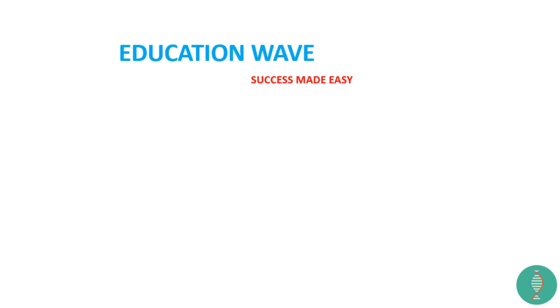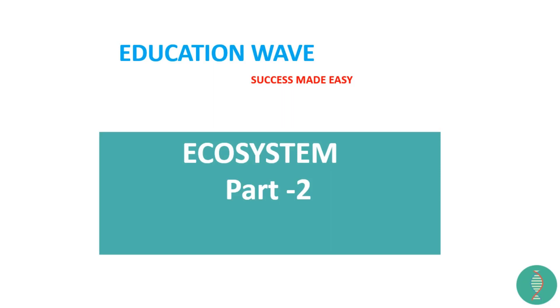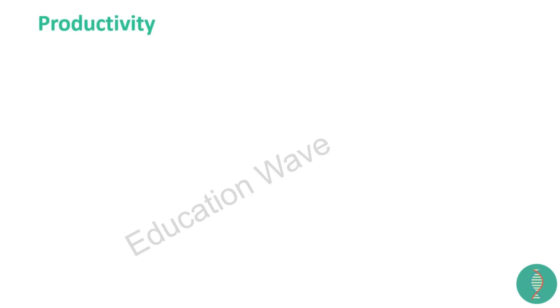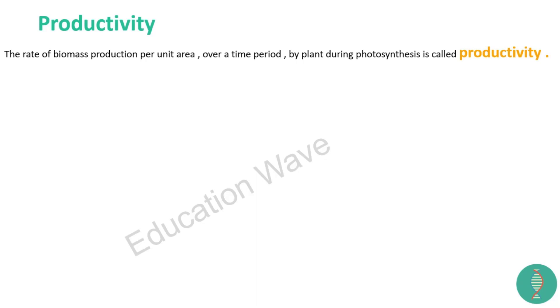Hello friends, welcome to Education Wave - Success Made Easy. This is ecosystem Part 2. Last video mein we had discussed ecosystem kya hota hai - the introduction part was covered. Now in this video we are going to learn about productivity. So what is productivity? Iske do types hain - primary productivity and secondary productivity. The rate of biomass production per unit area over a time period by plant during photosynthesis is known as productivity.